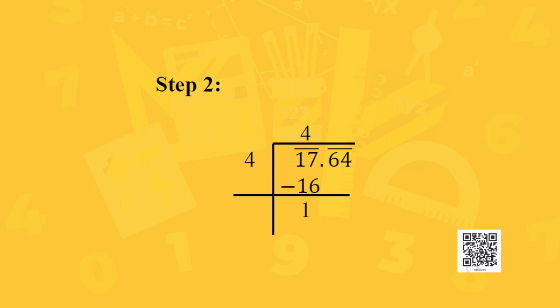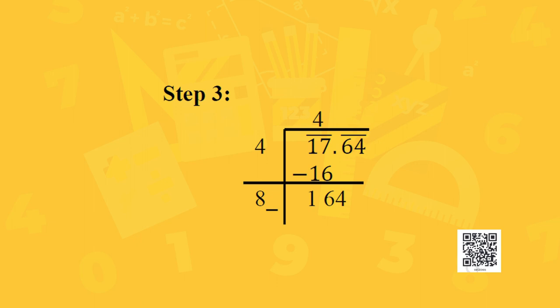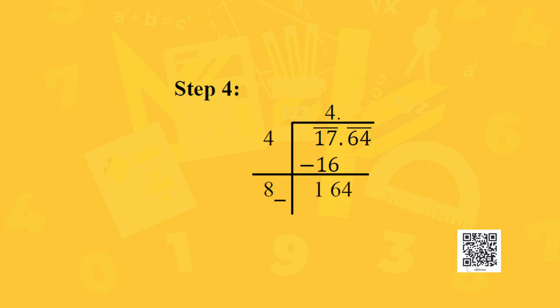In step 2, the leftmost bar is on 17. Since 4 squared < 17 < 5 squared, take 4 as divisor with 17 as dividend. 4 divides 17 four times, leaving remainder 1. In step 3, bring down 64 to get new dividend 164. In step 4, double the divisor to get 8, write a blank to its right, and since 64 is a decimal part, place a decimal point in the quotient beside 4.